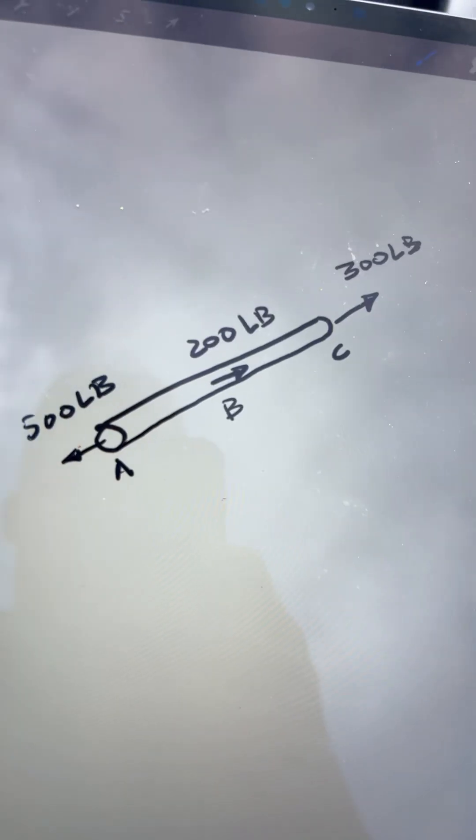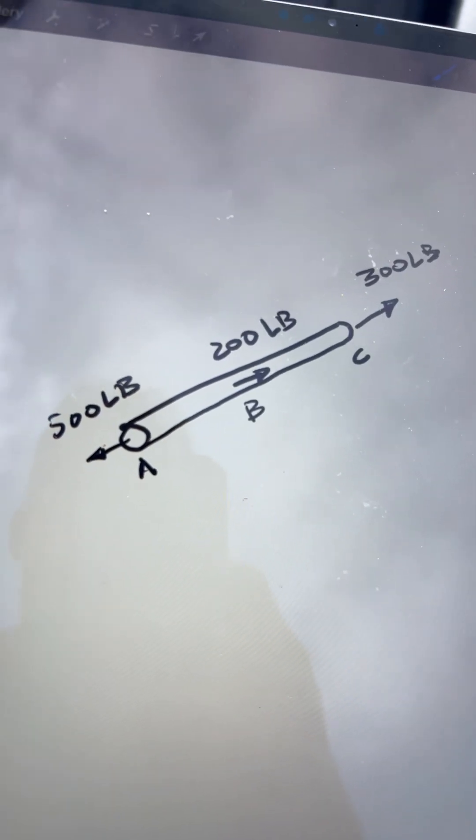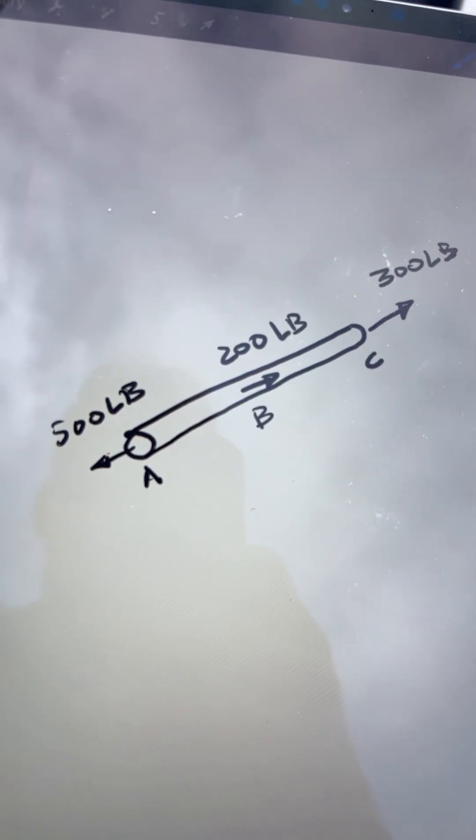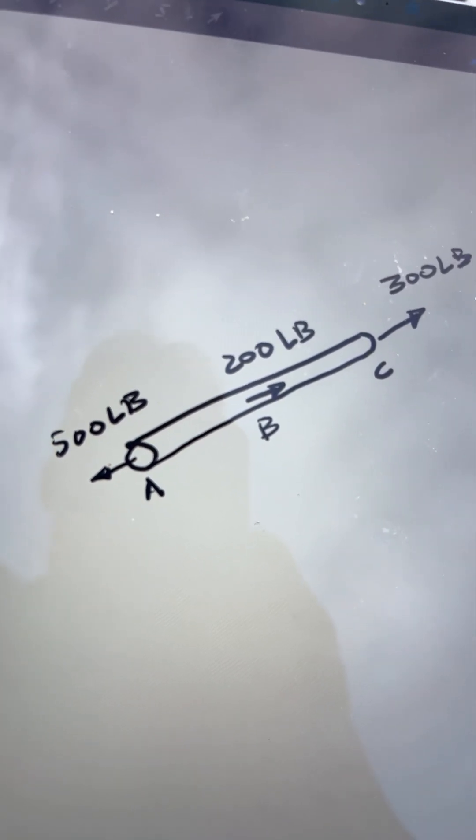Folks, quick refresher on equilibrium using the simplest of problems. Suppose we have a simple rod with three forces loaded like this, and we're asked to find the force in segment AB and in BC.